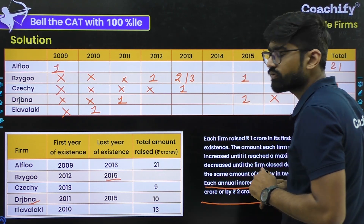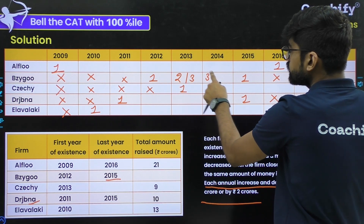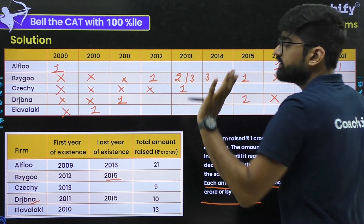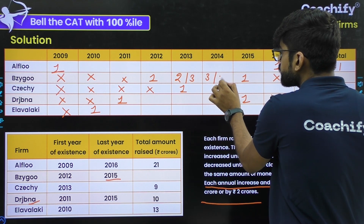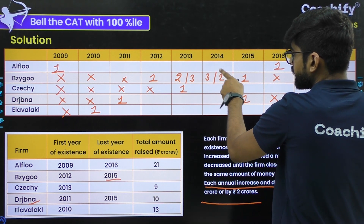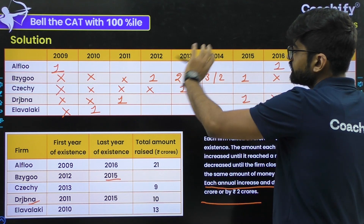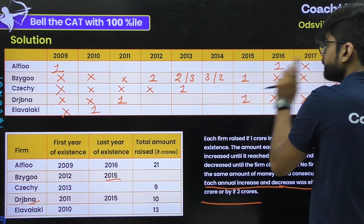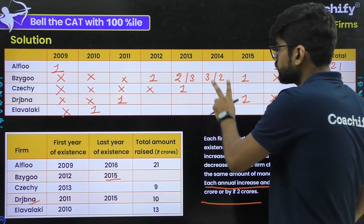Keeping the increase-then-decrease trend in mind, for B the possible values in 2014 are: if 2013 = 2, then 2014 = 3 and 2015 = 1, giving 1, 2, 3, 1 — increases of 1 CR then decreases. If 2013 = 3, then 2014 = 2 and 2015 = 1, giving 1, 3, 2, 1 — an increase of 2 CR then two decreases of 1 CR. In both cases the total is 7. These are the only two combinations possible for B.